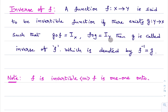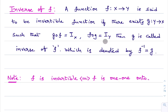So, a function f from X to Y is said to be invertible if there exists g from Y to X such that g∘f = iX and f∘g = iY, then g is called the inverse of f.